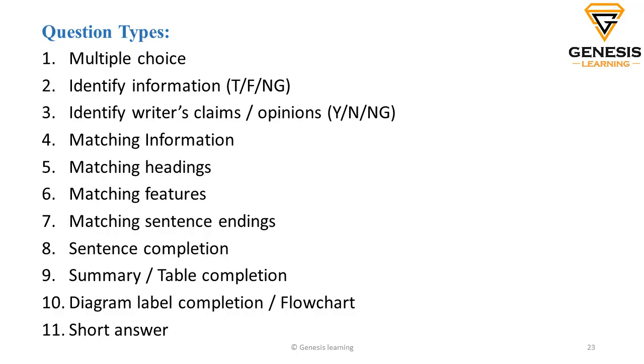There are around 11 different question types for your reading. You've got multiple choice; true, false, not given — where a statement is given and you say whether it is true, false, or not given according to the passage, not what you personally think; then the writer's claims, popularly known as yes, no, not given; matching information; matching headings; matching features; matching sentence endings; sentence completion; summary or table completion; diagram; and lastly, short answer. You will get a couple of passages, you read them and answer the questions. The main thing is to get familiarized with the different question types.